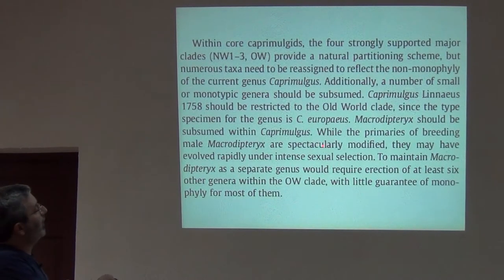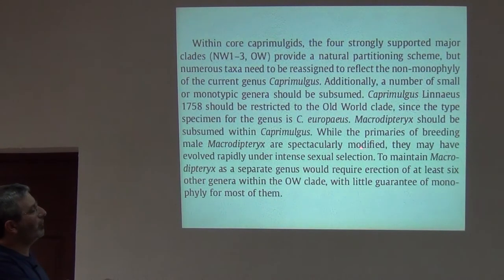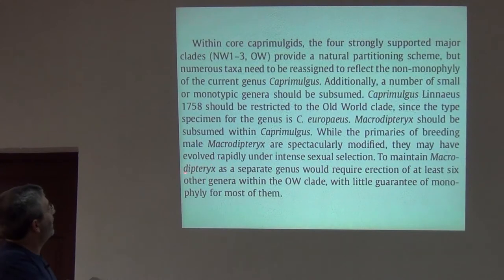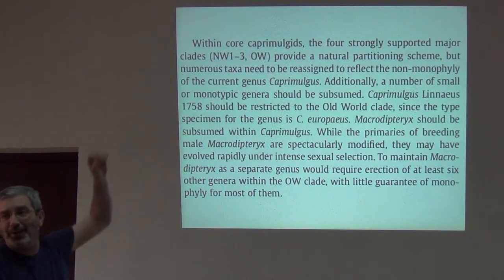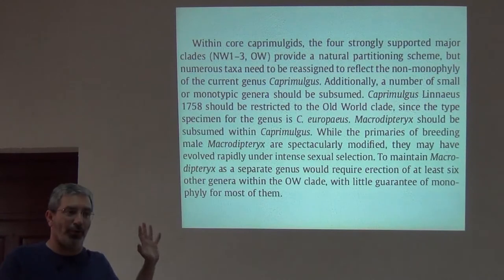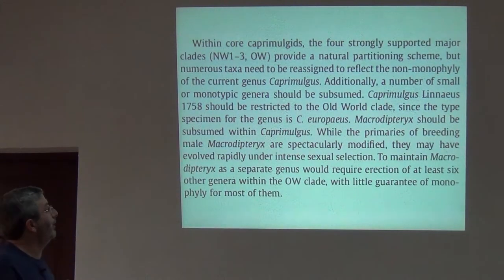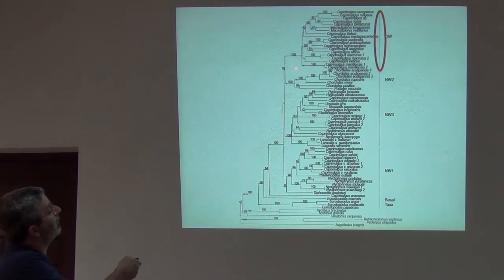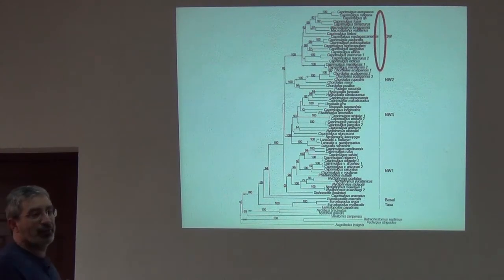Looking at the Old World clade in detail: it includes Caprimulgus europaeus, and that genus goes all the way back to Linnaeus in 1758, which means the Old World clade holds onto the name Caprimulgus. But Macrodipteryx is nestled well within Caprimulgus. If you wanted to keep Macrodipteryx as a separate genus, then every one of these lineages would also have to be its own separate genus — that's a lot of nomenclatural instability.